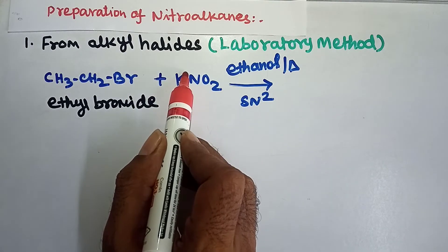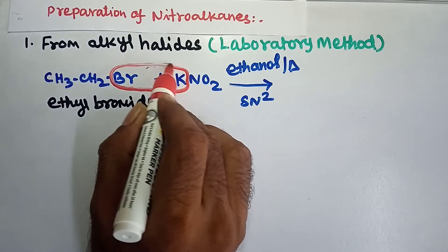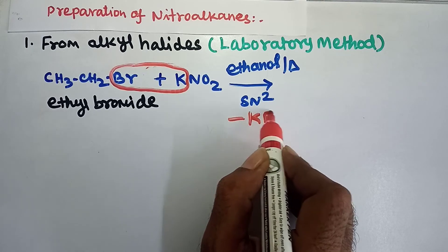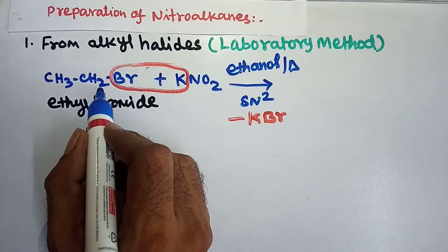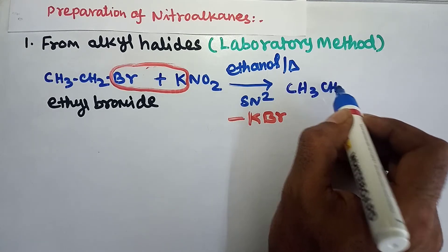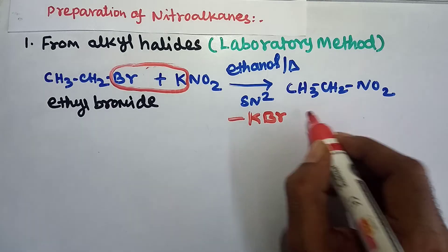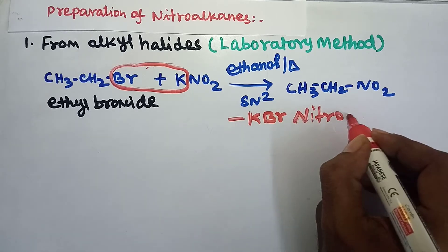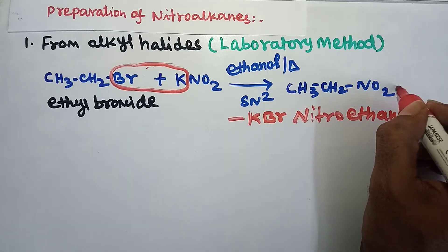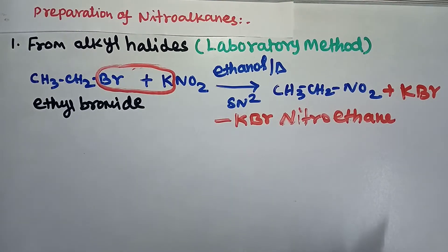The potassium and bromide are eliminated as potassium bromide, KBr. The remaining CH3CH2 combines with NO2 to give nitroethane, plus potassium bromide as a byproduct.